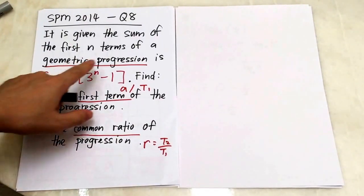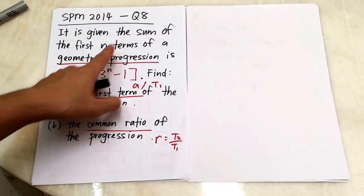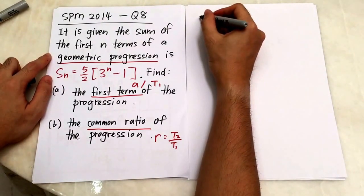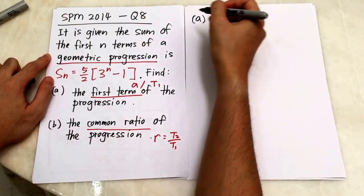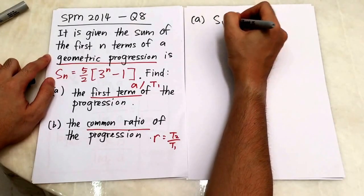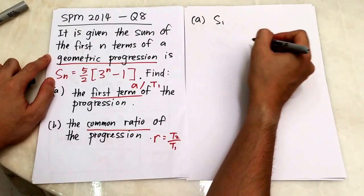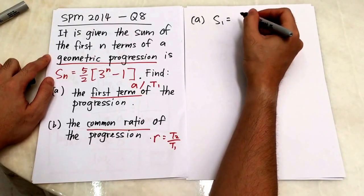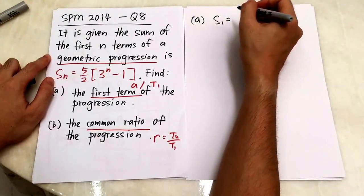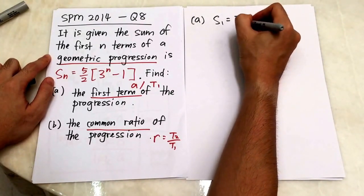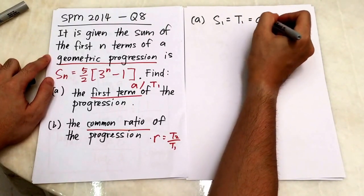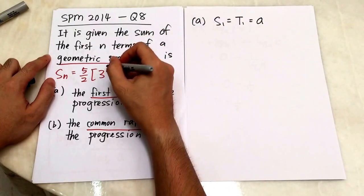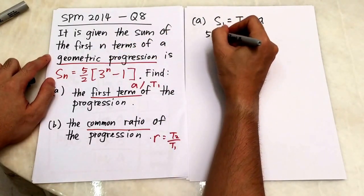S_n means the sum of the first n terms. For part A, to find the first term, I take the sum of just the first term, which means S1 equals T1, which equals A. So S1 is found by substituting n = 1 into the formula, giving five over two times three to the power of one minus one.